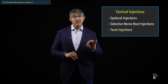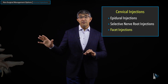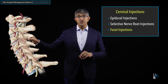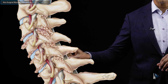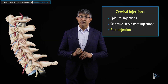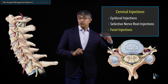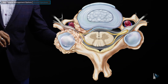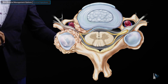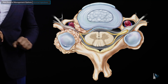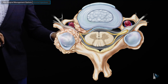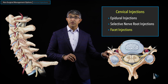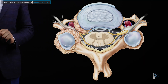The last injection to talk about is a facet injection. Looking at the spine from the side, you can see some of the joints and some of the arthritis. In the axial view, you can see the front of the spine, spinal cord, nerves on each side, and the lamina and spinous process in the back. You can see all the arthritis involving the joint in the back, and what we call uncovertebral hypertrophy, all of which is causing pressure on the nerve.